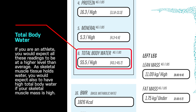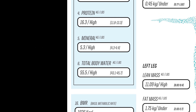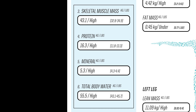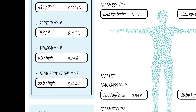If you are an athlete, you would expect all these readings to be at a higher level than average. As skeletal muscle tissue holds water, you would also expect to have high total body water if your skeletal muscle mass is high. You would also expect someone with high skeletal muscle tissue to have higher protein and mineral.